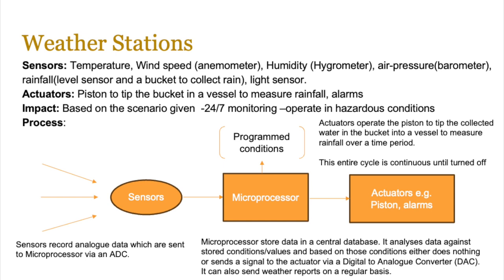Alarms might also need to be sounded if the level of rainfall is too high. The impact is based on the scenario, but the benefits are that weather stations offer 24/7 monitoring and can be used in hazardous conditions — for example, during hurricanes they can still measure wind speed rather than putting human beings in harm's way. The process is once again the same: sensors record analog data sent to the microprocessor, which compares it against stored conditions and informs an actuator to do something. The entire cycle is continuous until turned off.